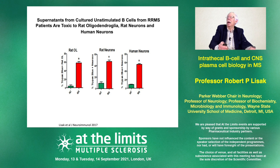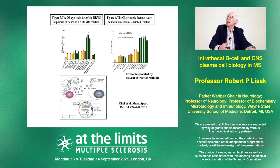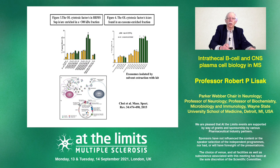We then looked at rat oligodendrocytes and also rat and human neurons in culture. The red bar shows the effect of MS B-cell supernatants on cell death of oligodendrocytes; the green is from matched age- and sex-normal human controls. As for what the toxic factor is — we don't know yet. We tried sizing with progressively different filter pore sizes, and whatever it is weighs more than 300 kDa. We didn't think it was IgM, so we got together with Paul Stemmer who runs the proteomics core at Wayne State, and he suggested it could be something particulate like exosomes.